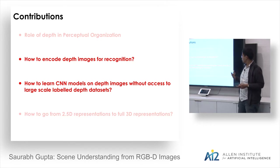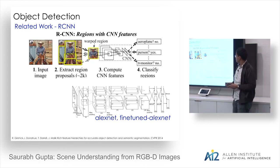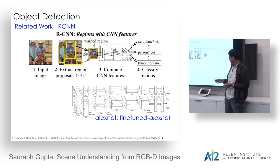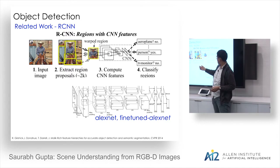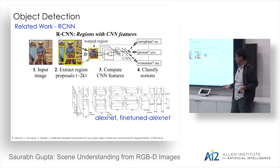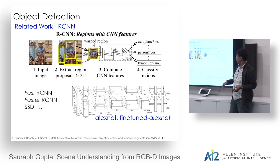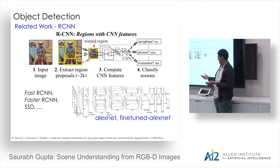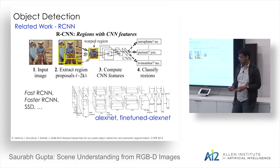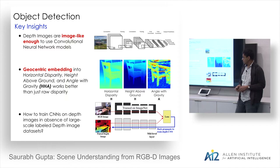Next: how do you encode depth images for recognition and train CNNs on depth when you lack labeled data? The dominant paradigm for object detection uses a CNN on pre-computed regions — the RCNN pipeline: extract region proposals, compute CNN features trained on large labeled datasets like ImageNet, then fine-tune for the specific task. The question is how to do feature learning for RGBD images.